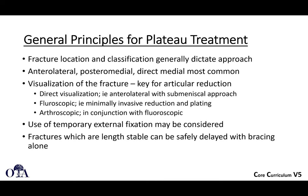Visualization of the articular segment is really important for reduction. We can do it one of three ways: we can directly look at it — on the lateral side, usually done with a submeniscal approach. We can use fluoroscopy to identify subchondral fragments, especially with minimally invasive techniques. And there are roles for arthroscopy, sometimes in conjunction with fluoroscopic imaging.